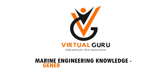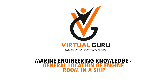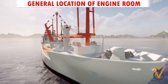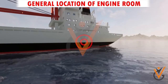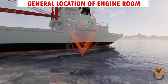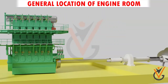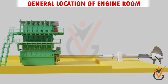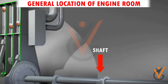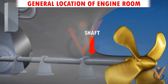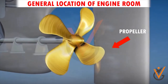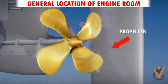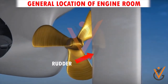Marine engineering knowledge: the engine room is in the bottom aft portion of the ship, which is considered the heart of the ship. The main engine is connected to the propeller by means of the shaft and drives the propeller. The rudder is used for steering.